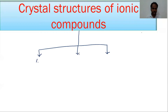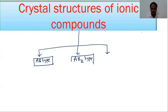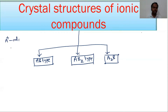The first category is AB type, the second one is AB2 type, and the third one is A2B type. Here, A is the cation and B is the anion. So AB is one cation, one anion type; AB2 is one cation, two anions type; and A2B is two cations, one anion type.